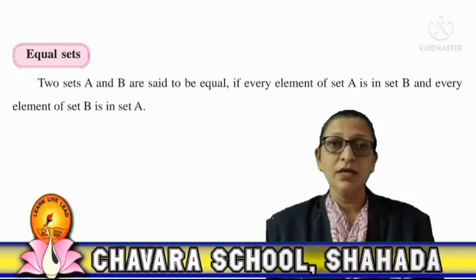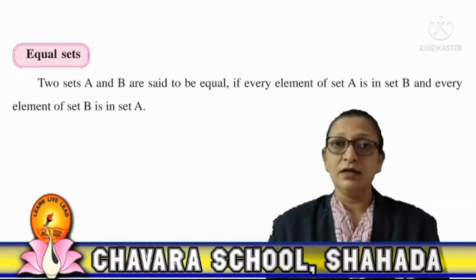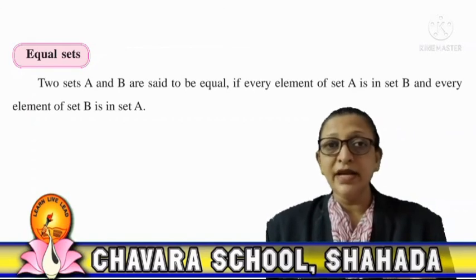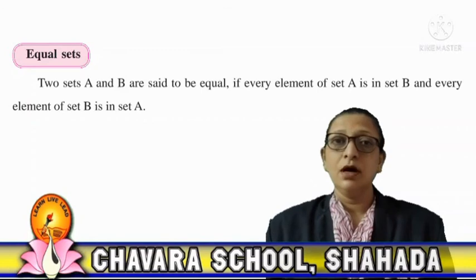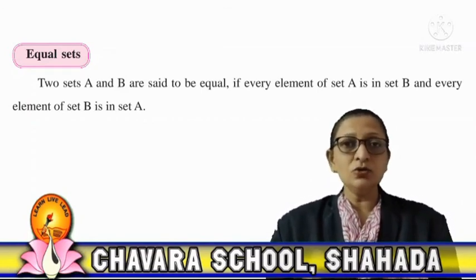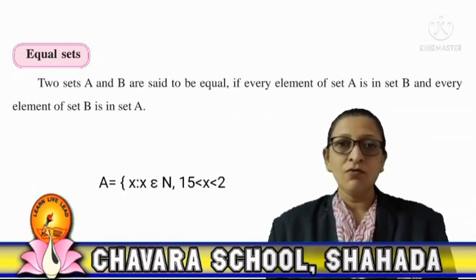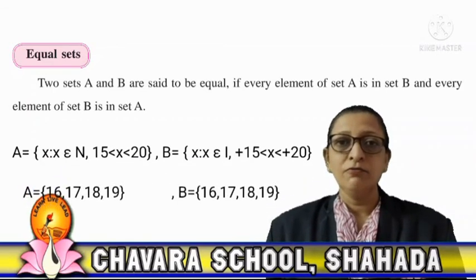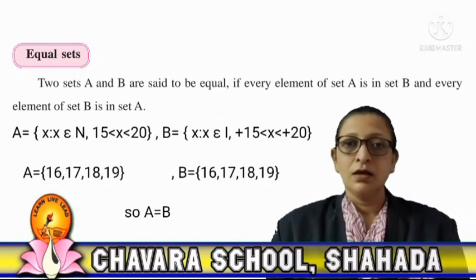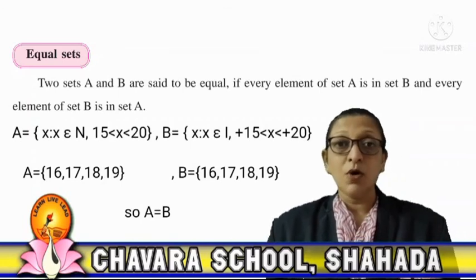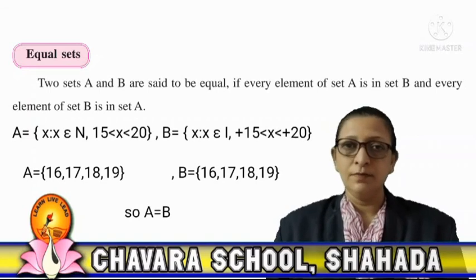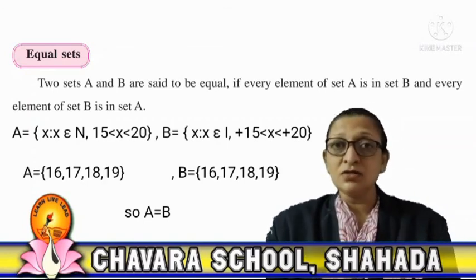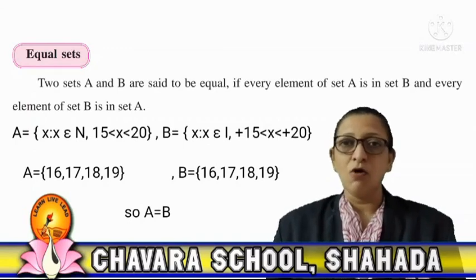Two sets are said to be equal sets when both sets contain the same or identical elements — the elements present in one set are exactly the same as those in the second set. For example, the set of natural numbers between 15 and 20, and the set of positive integers between 15 and 20 — both sets have identical elements, so they are equal sets.